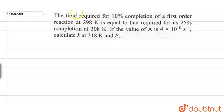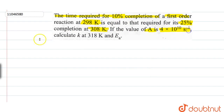The question we have is: the time required for 10% completion of a first order reaction at temperature 298 Kelvin is equal to that required for its 25% completion at 308 Kelvin. Given the value of A, we have to calculate k at 318 Kelvin and find EA.